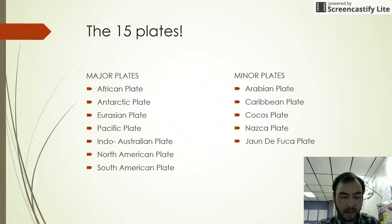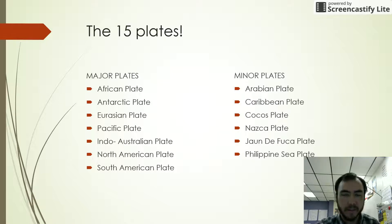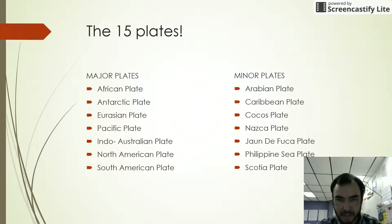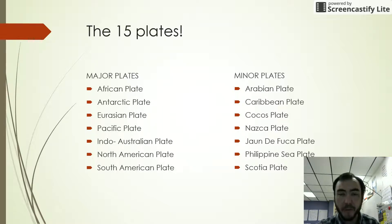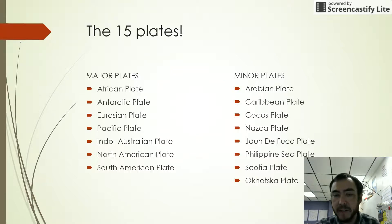The Juan de Fuca plate extends to southern Canada, not quite as far up as Alaska. The Philippine Sea plate is located in and near the Philippine Sea. Then there's the Scotia plate — which I always thought was near Nova Scotia, Iceland, or Greenland — but it's actually located south of South America. And lastly, we have the Okhotsk plate, which is located on the Okhotsk Peninsula in northeastern Russia.